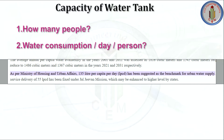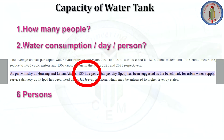As per the Ministry of Housing and Affairs, 135 liters per capita per day has been suggested as the benchmark for urban water supply. So 135 liters per day per person is the water consumption. Now we have the answer for the second question. For the first question, six persons are going to live in that house. 135 liters includes all the water usage per day per person.